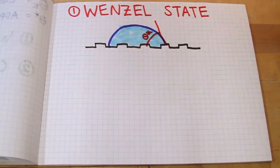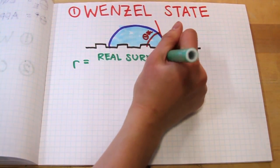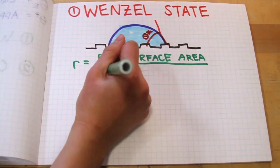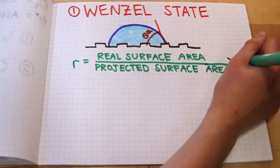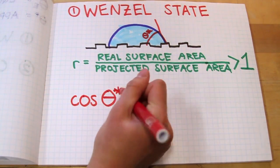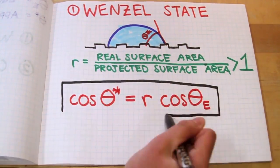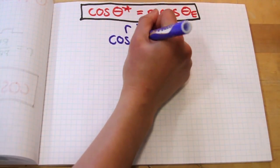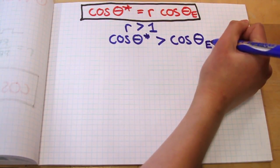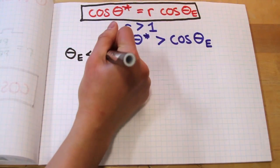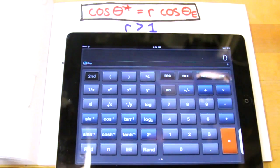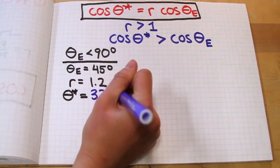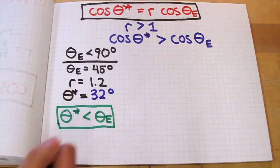In the Wenzel model, surface roughness is quantified by r, which is the real surface area divided by the projected surface area. Since no surface is completely smooth at the molecular level, r is greater than 1. The Wenzel model states that cos(theta*) = r × cos(theta_e). Since r is greater than 1, the cosine of theta* is greater than the cosine of theta_e. For example, if theta_e is 45 degrees and r is 1.2, theta* turns out to be 32 degrees — so when theta_e is less than 90 degrees, theta* is even smaller.